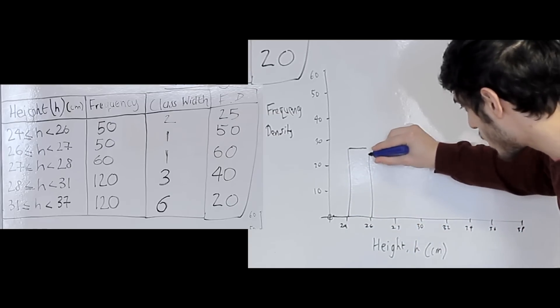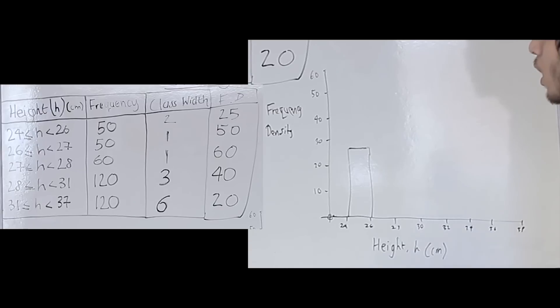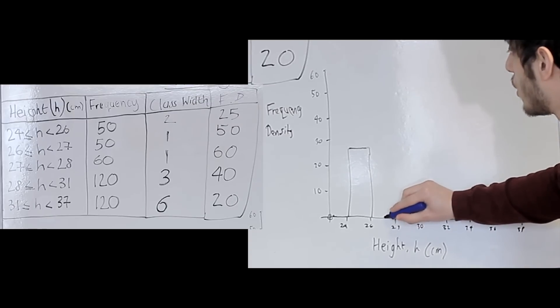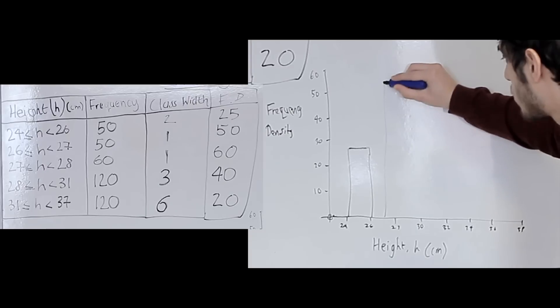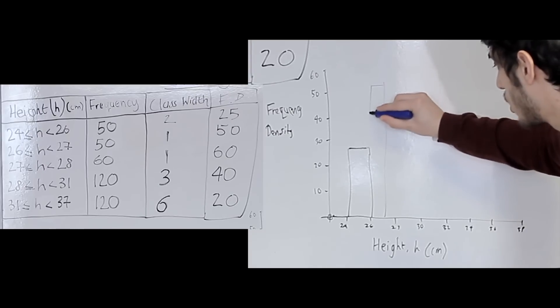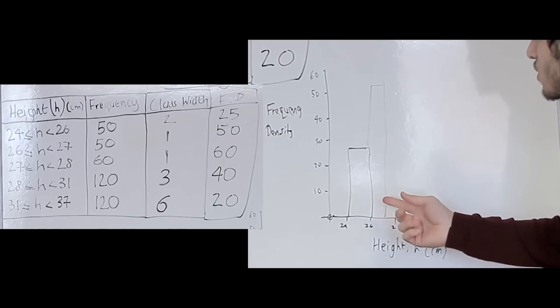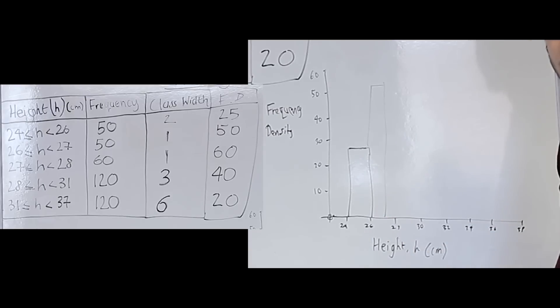And that is our first bar. Our second one is 26 and 27 and our frequency density is 50, so 26 to 27 is roughly here and should go all the way up to here. You can notice that the bars are in different widths. That doesn't matter, our histograms are meant to be like that.